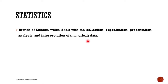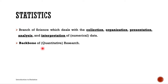Some may also call it a body of techniques or procedures dealing with the collection, organization, presentation, analysis, and interpretation of information that can be stated numerically. It must also be stated that statistics is the backbone of quantitative research. We can make an acronym out of those five words: COPAI — C for collection, O for organization, P for presentation, A for analysis, and I for interpretation. So statistics is a branch of science that deals with COPAI of data, and it's the backbone of quantitative research.